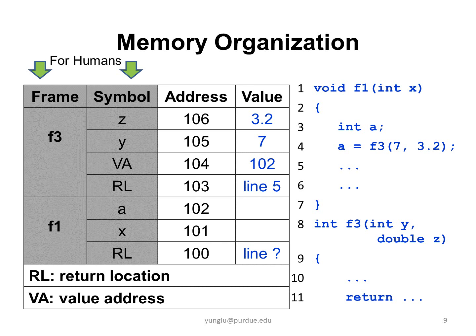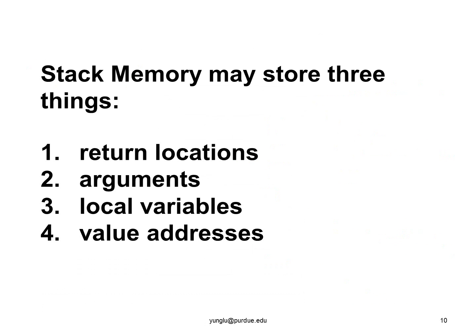I have explained the four things that may be stored in stack memory. They are return locations, the arguments, local variables, and value addresses. In the next lecture, we will see some examples from real C programs.